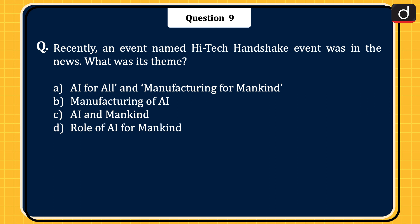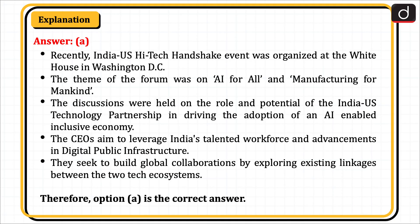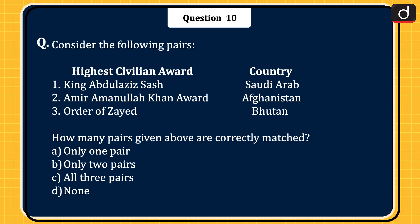Next question: Recently, an event named 'High-Tech Handshake' was in the news. What was its theme? AI for all and manufacturing for mankind; manufacturing of AI; AI and mankind; or role of AI for mankind? The correct answer is Option A, 'AI for all and manufacturing for mankind'. The India-US High-Tech Handshake event was organised at the White House in Washington D.C. Discussions were held on the role and potential of the India-US technology partnership in driving adoption of an AI-enabled inclusive economy. The CEOs aimed to leverage India's talented workforce and advancements in digital public infrastructure to build global collaborations. Therefore, Option A is the correct answer.